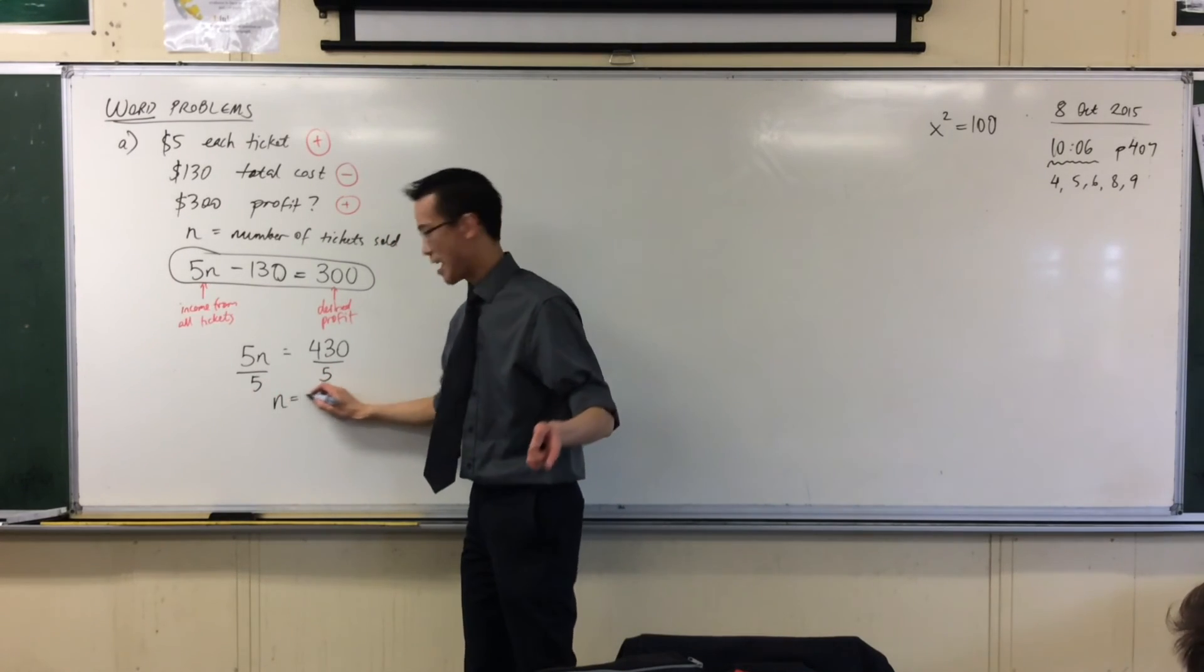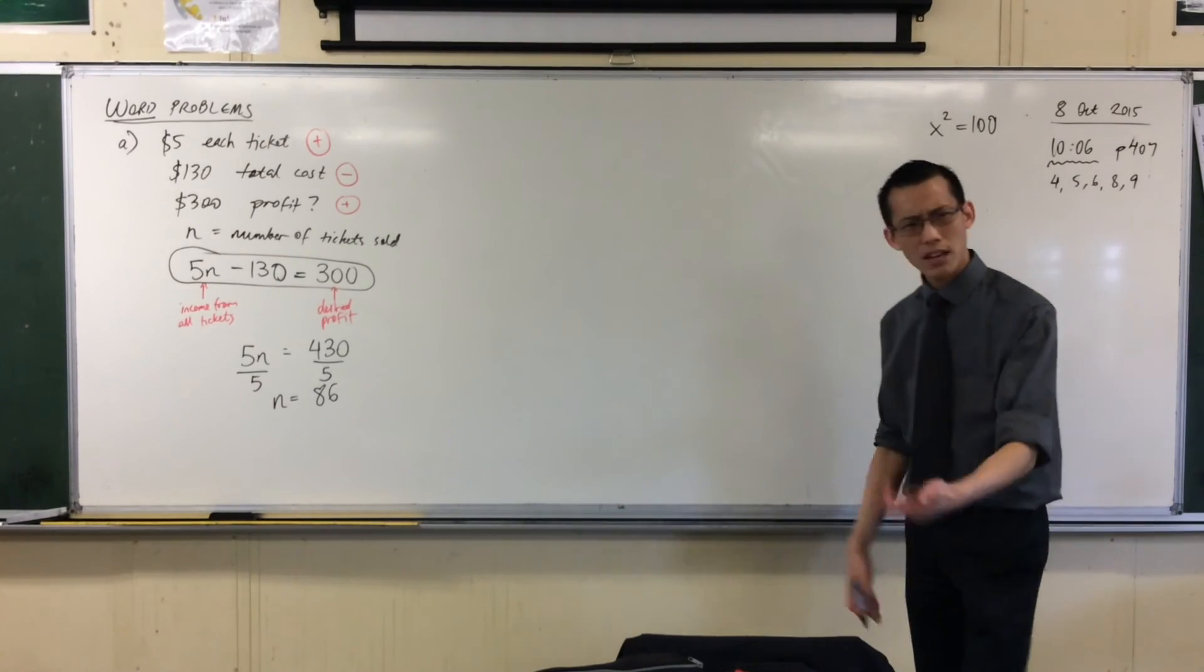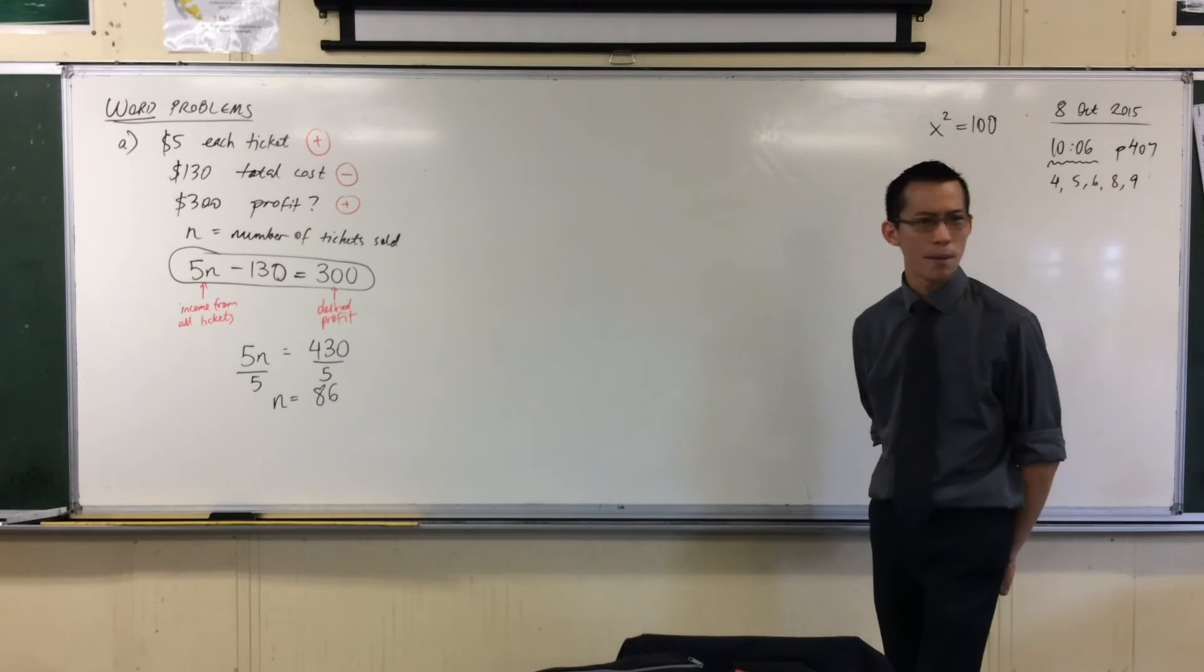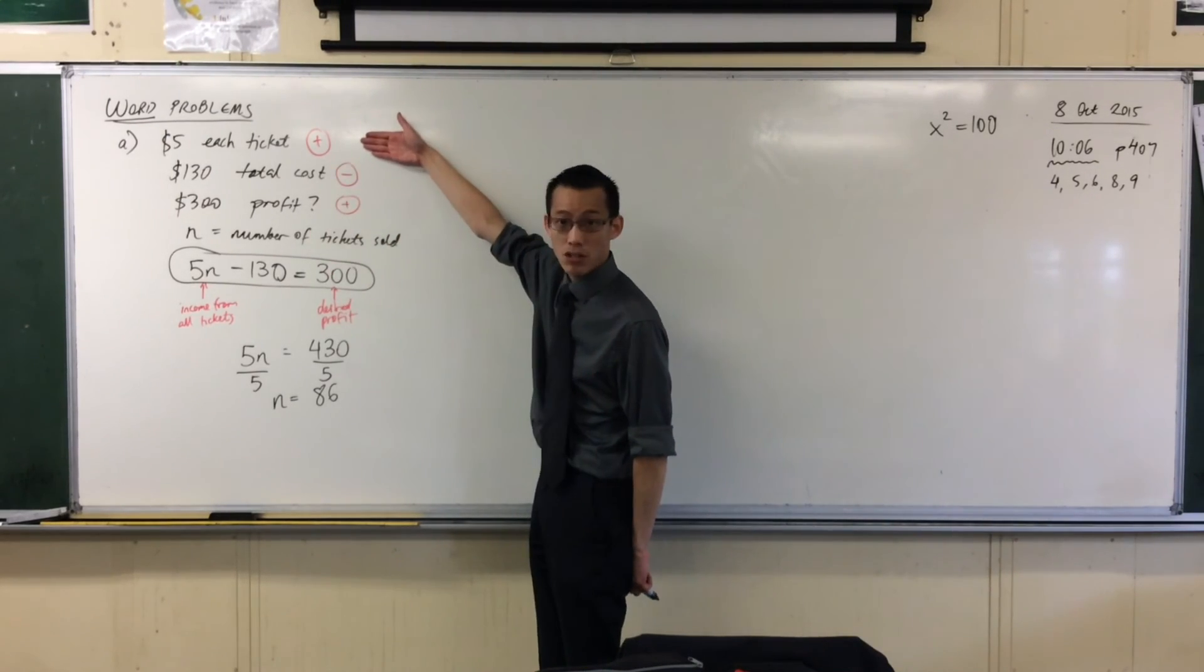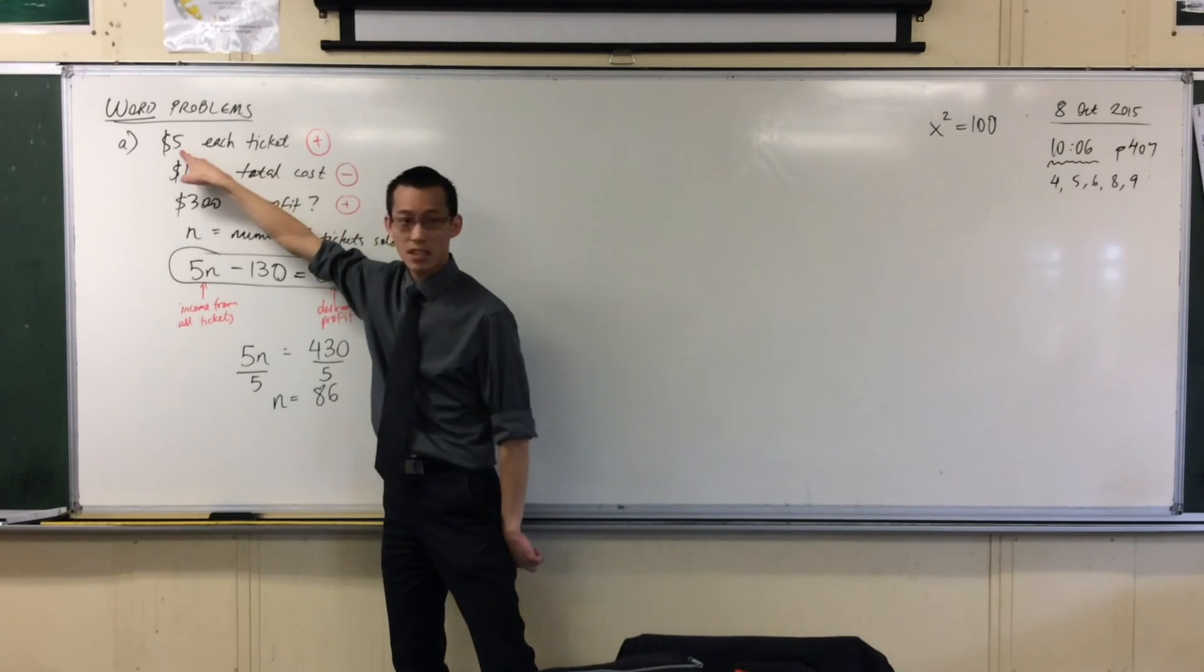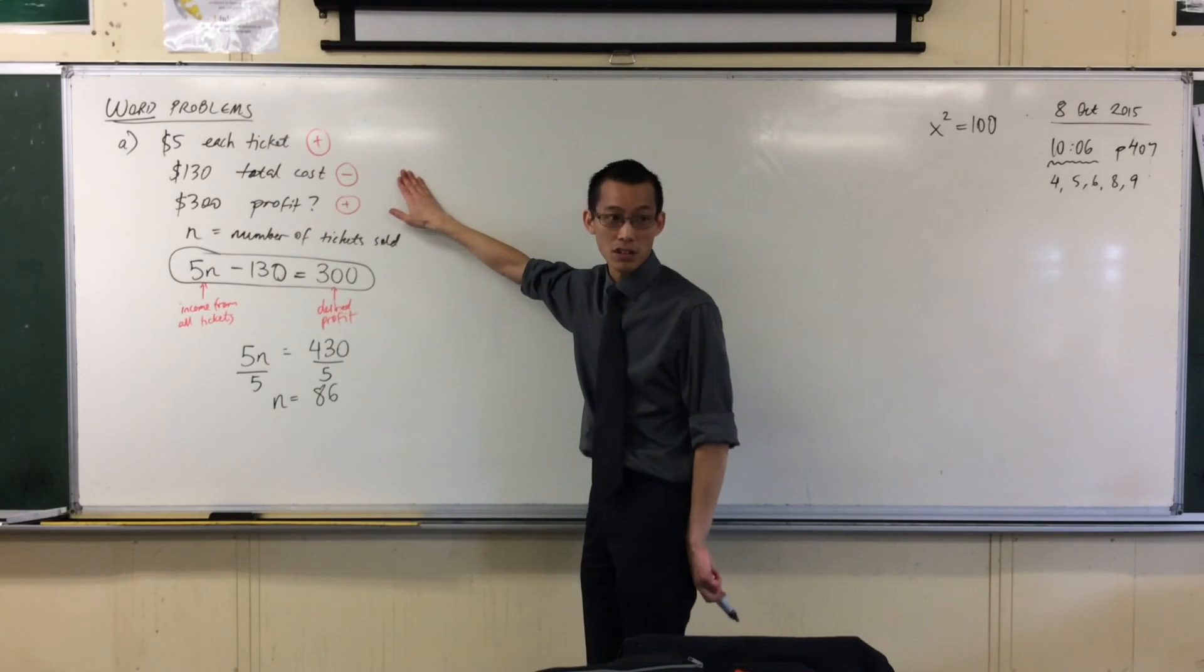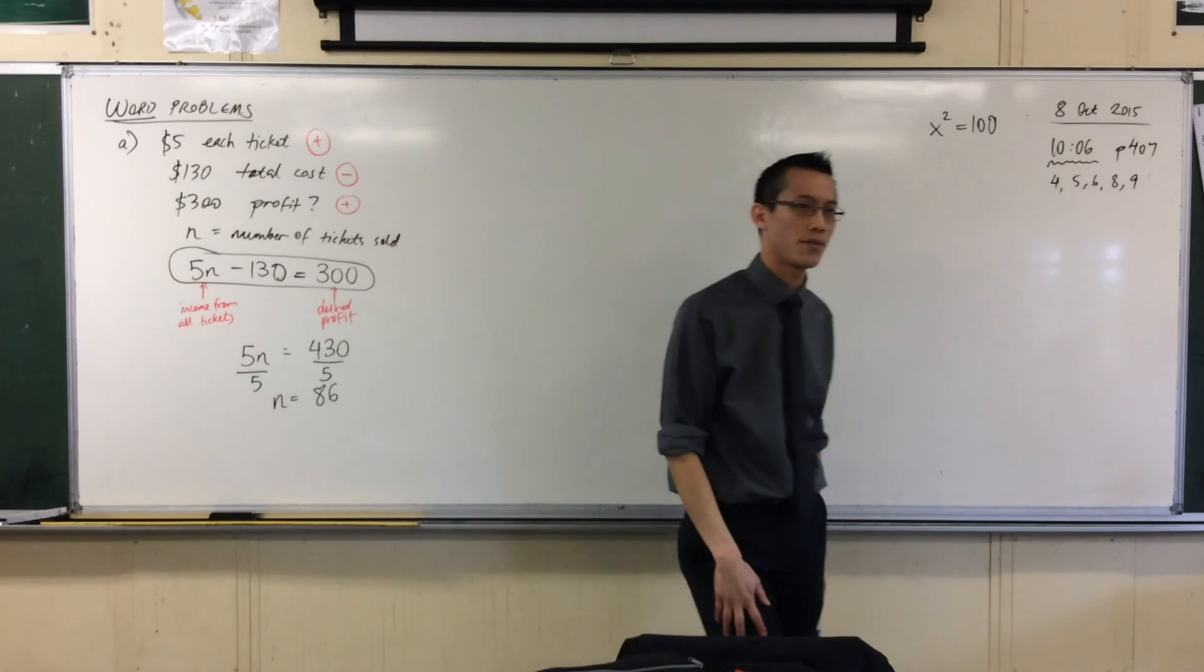And that's going to tell you, yep, 86. Very good. Now just check, does that seem a reasonable number? Yes. Yeah, I think that's in the ballpark. And of course what you could do is you could just go back to this original and just crunch through the process. 86 times 5, that'll give you a figure. You take away your $130 because that money's going out, and you should end up on your $300 profit.